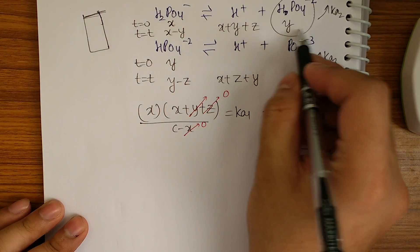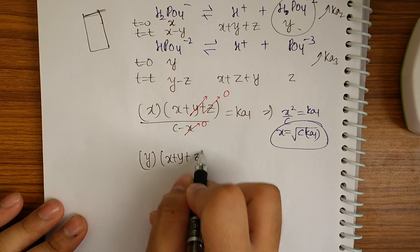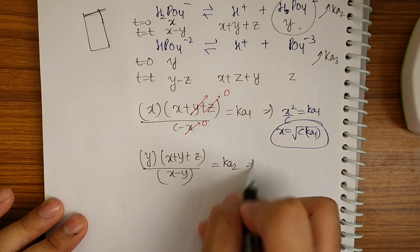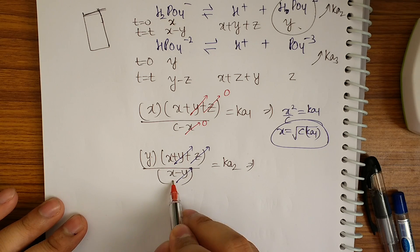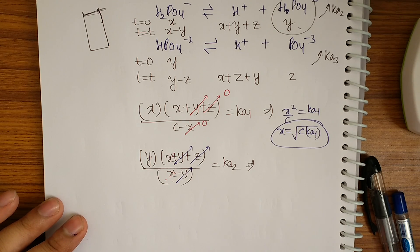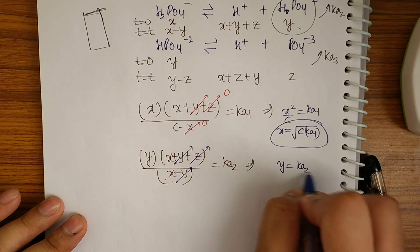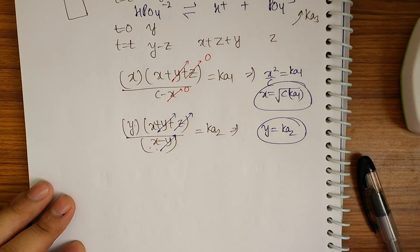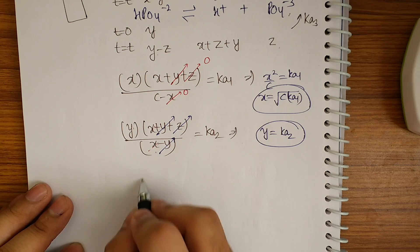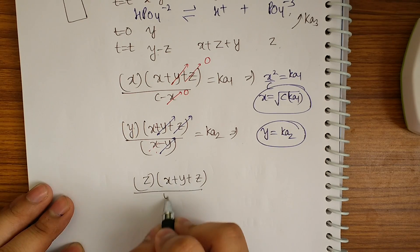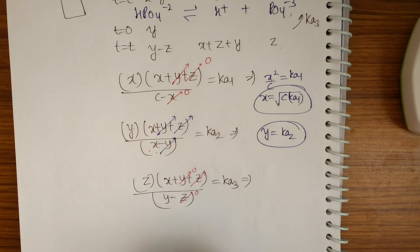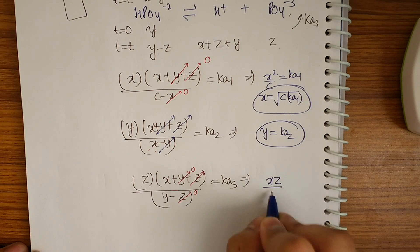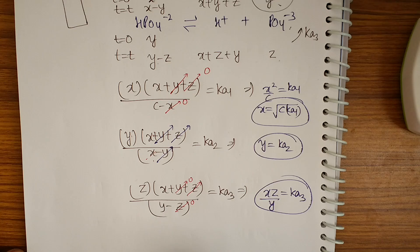Now applying Ka2 for the second equation: y·(x+y+z) / (x−y) = Ka2. Ignoring y and z where appropriate, this simplifies to y·x / x = Ka2, so the x terms cancel and we get y = Ka2.